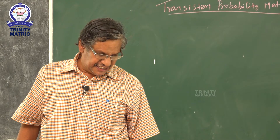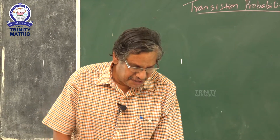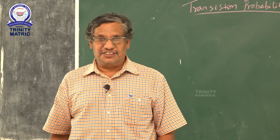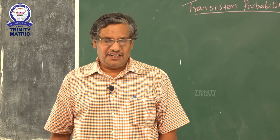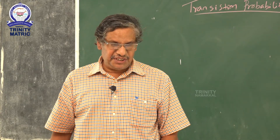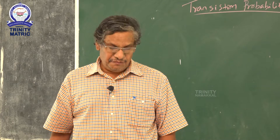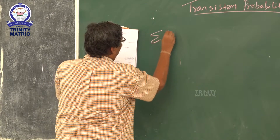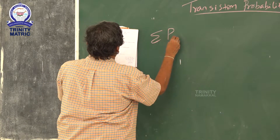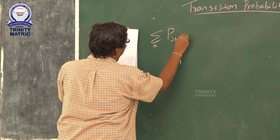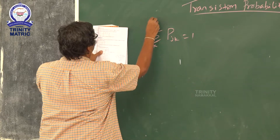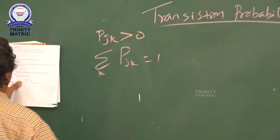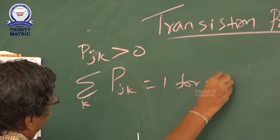That is called the transition probability matrix. All the values of P_JK must be greater than or equal to 0. All transition probabilities P_JK are greater than 0, and the summation of all P_JK values equals 1 for all J.